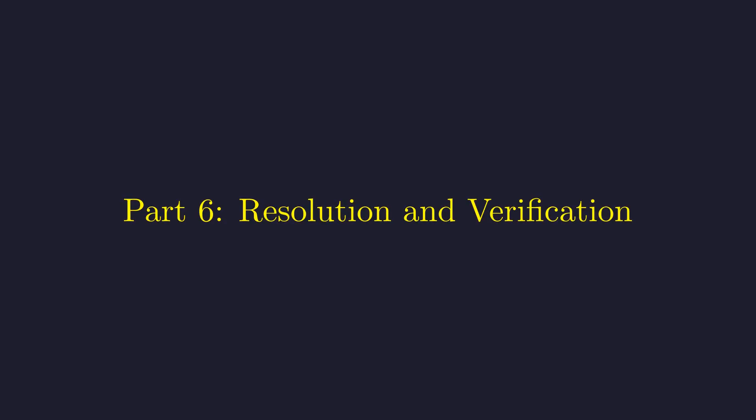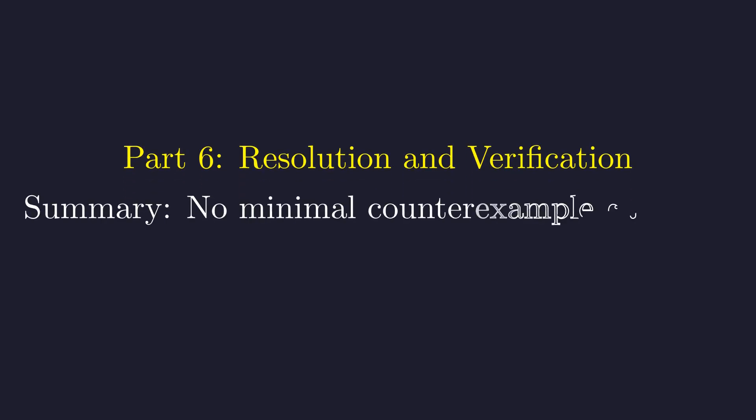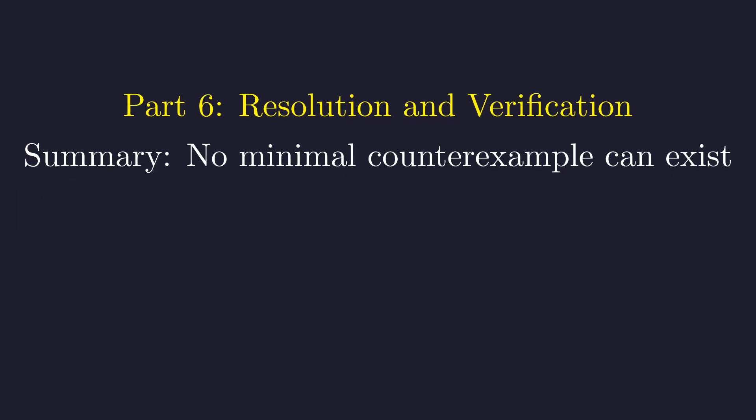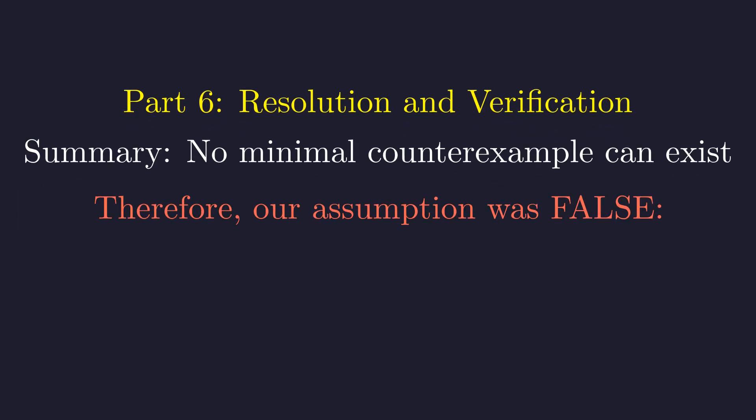We have completed our proof by infinite descent. Let me summarize the logical flow and verify our result with concrete examples. We assumed a minimal counterexample existed and derived a contradiction. Any supposed solution with non-perfect square k leads to a smaller solution, violating minimality. The infinite descent argument is complete. If any counterexample existed, we could construct infinitely many smaller ones, which is impossible for positive integers.